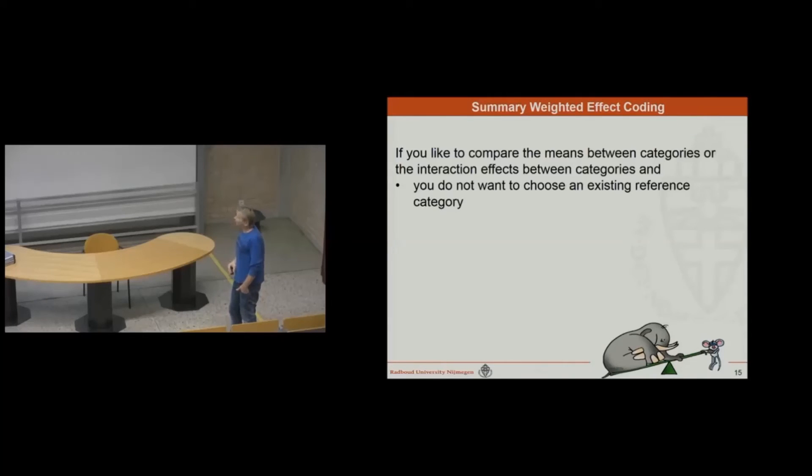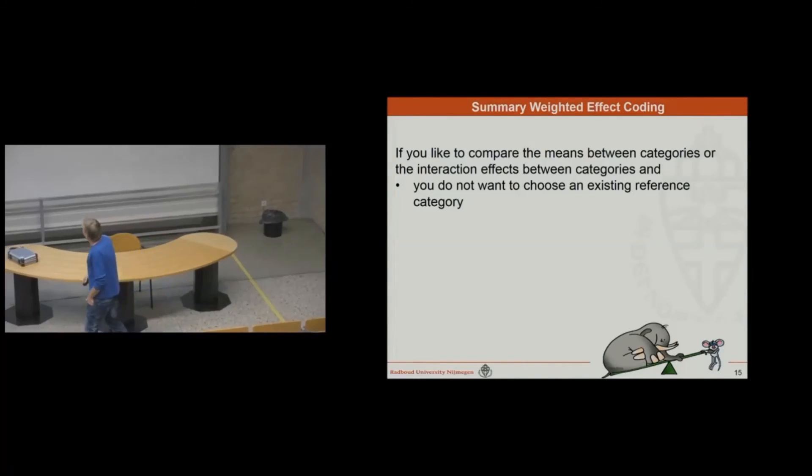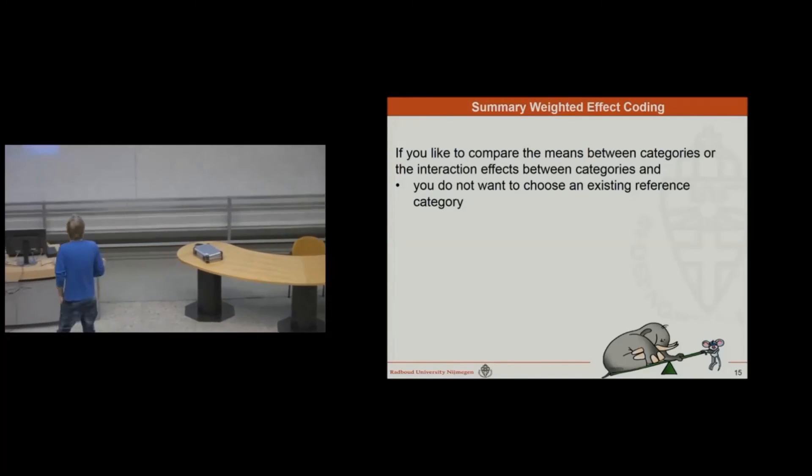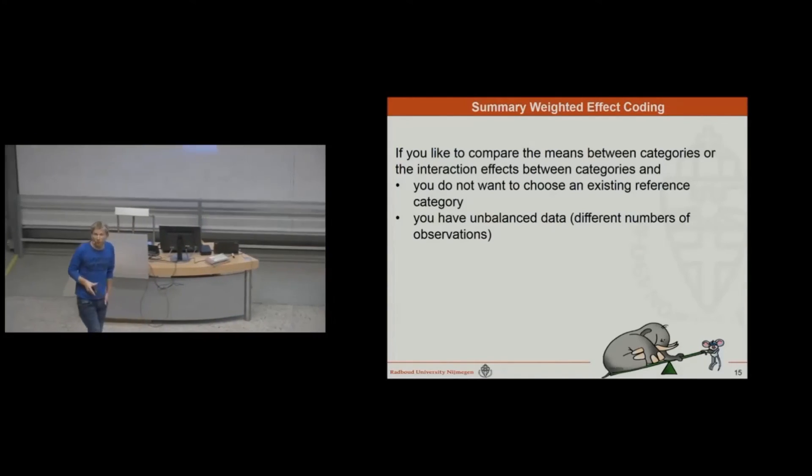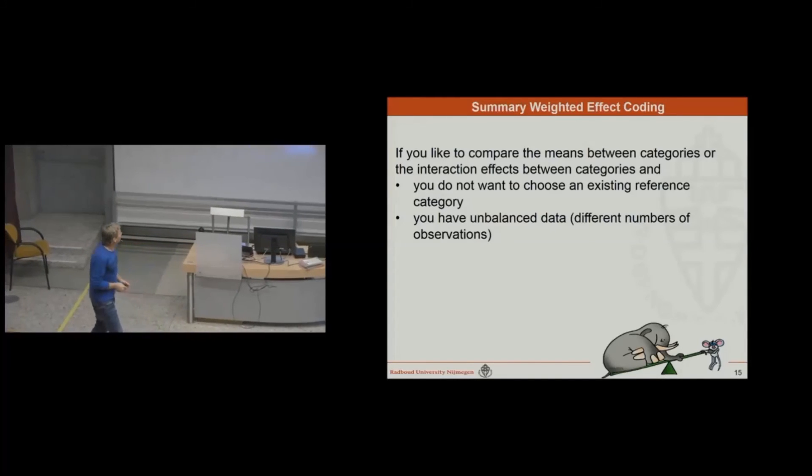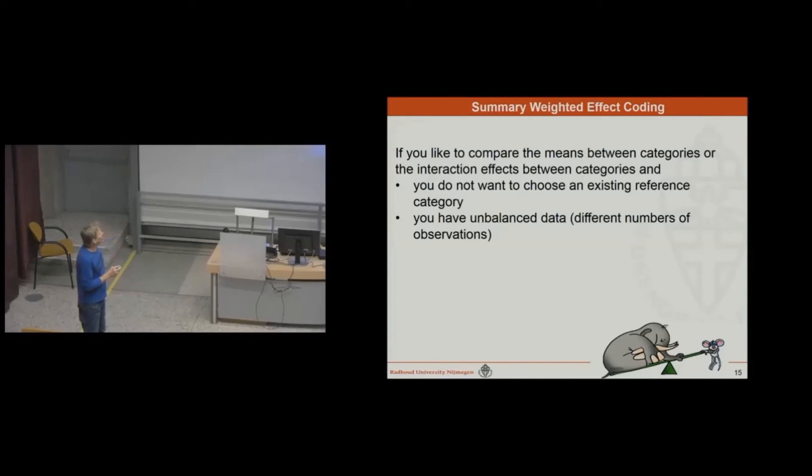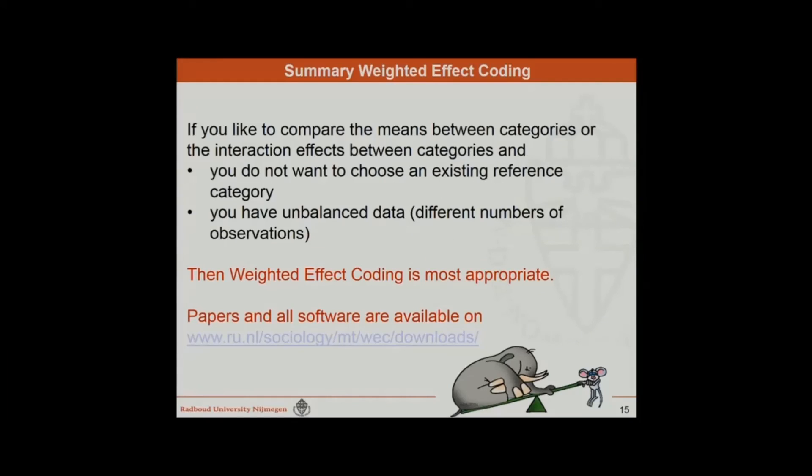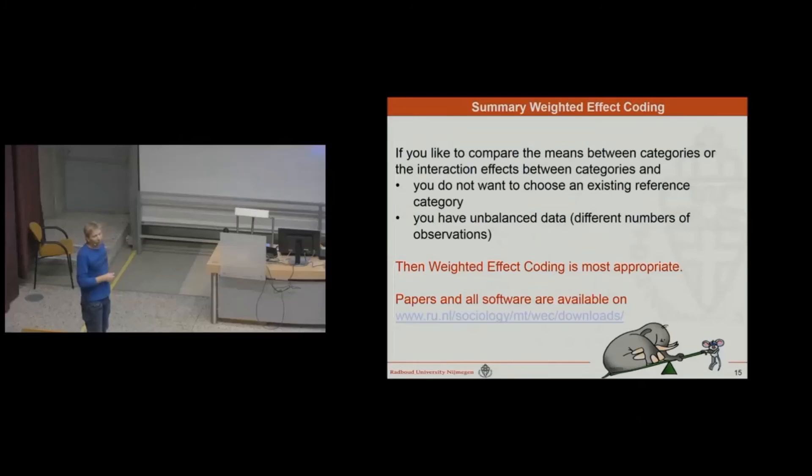So if you like to compare the means between categories or the interaction effects between categories and you do not want to choose a reference category and you have so-called unbalanced data, unbalanced data is the official name for having different number of observations, then weighted effect coding is most appropriate in our point of view. If you find this lecture interesting, the official paper is in open access mode and all the software you can use are available on this URL. So you are invited to take a look.